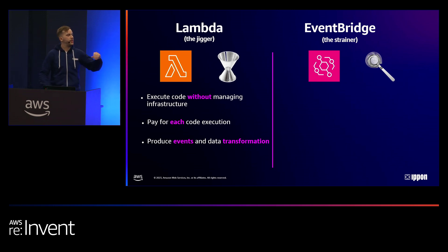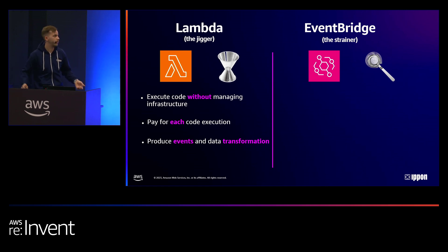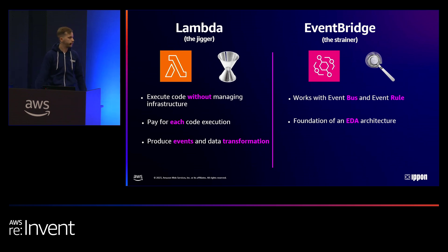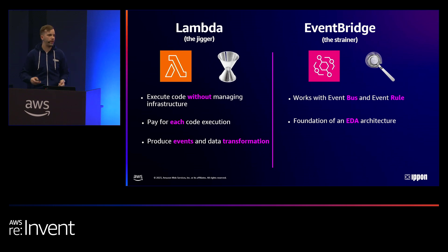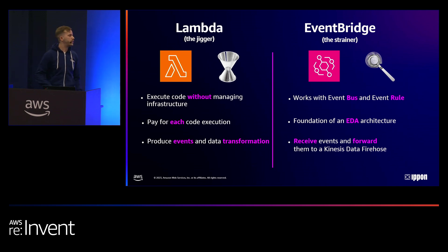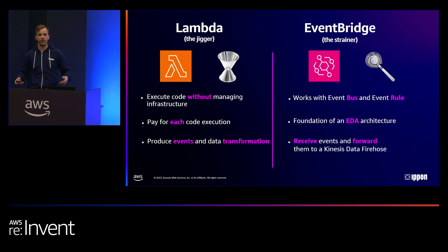We are also using EventBridge — and yes, I'm talking about event-driven architecture, I have to talk about EventBridge. This is going to be the strainer. How AWS EventBridge actually works is with event buses and event rules. This is obviously the foundation of every event-driven architecture. Every time you see event-driven architecture in AWS, it's either EventBridge or sometimes MSK. Here we are going to use EventBridge to receive events and forward them directly to a Kinesis Data Firehose.